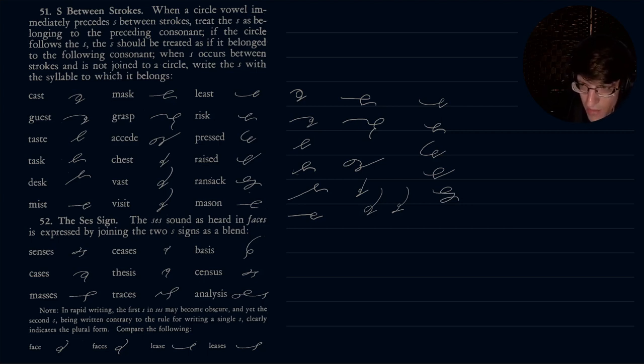Risk. Make sure the R is a little bit smaller than the L. Pressed. Raised. Ransack. So what would be an example? Treat the S if the circle follows the S. The S should be treated as it belongs to the following consonant. Okay, I can see it here with ransack, for instance, because our rule is after an N or M, then S is to be written with left-hand motion. Go back and watch the video and figure out exactly what's going on there.